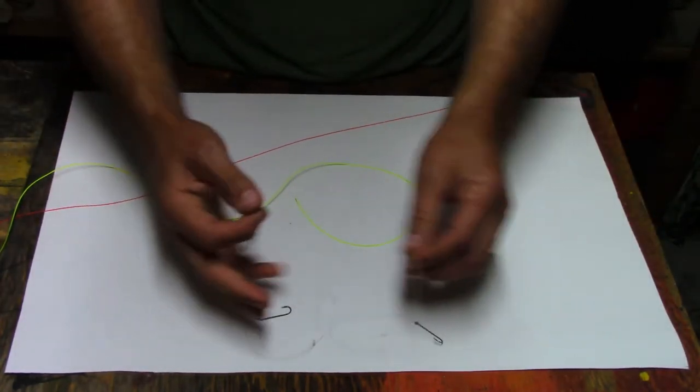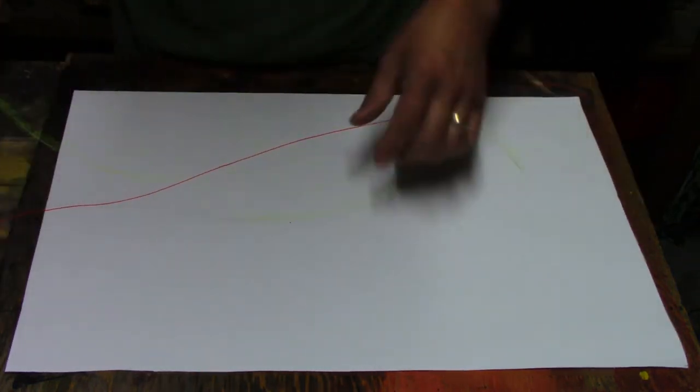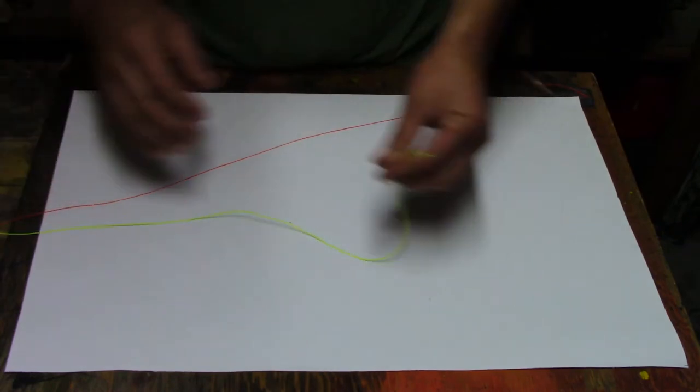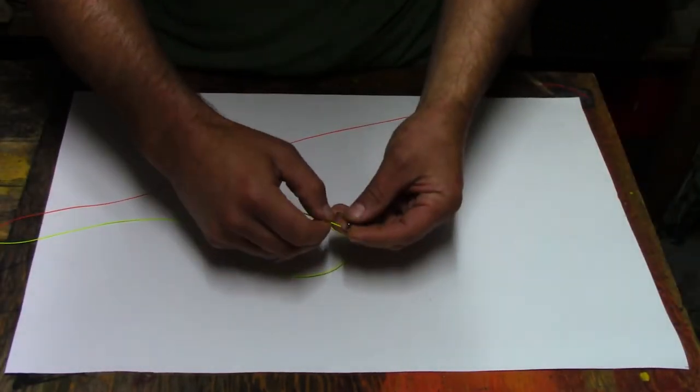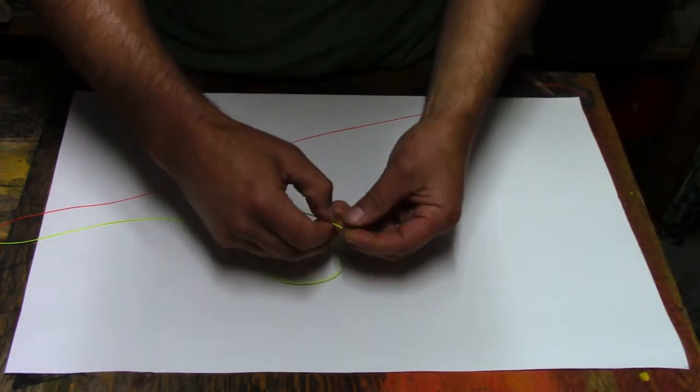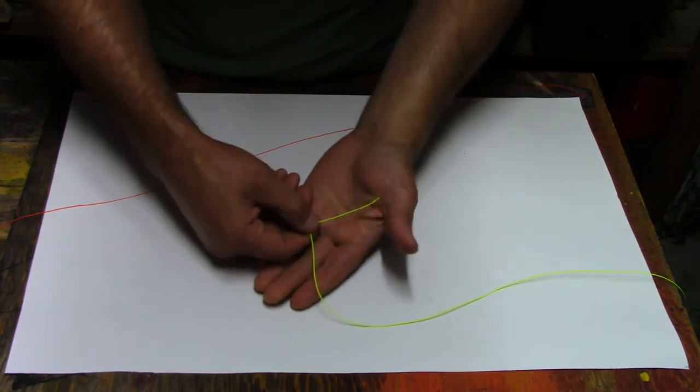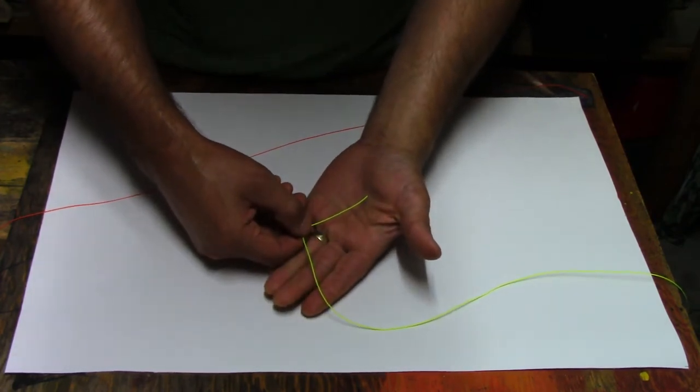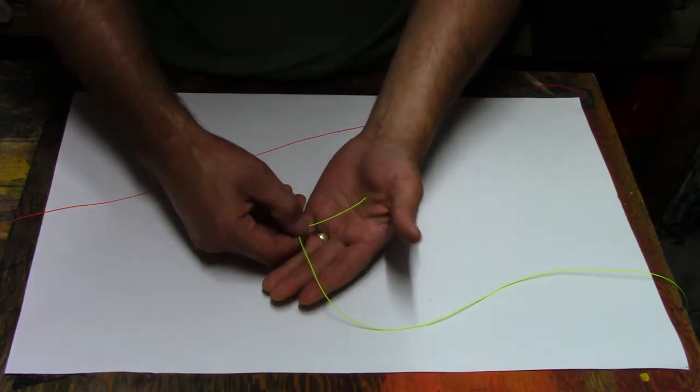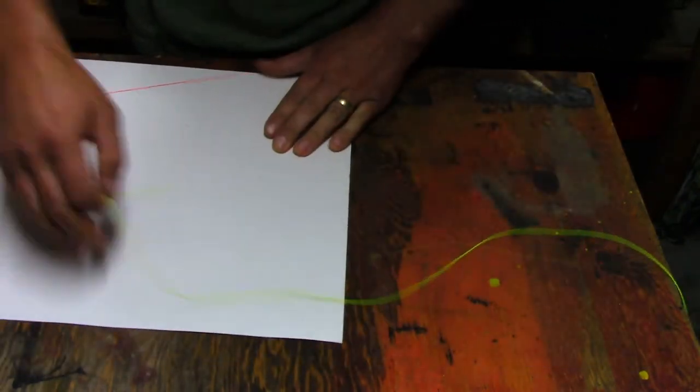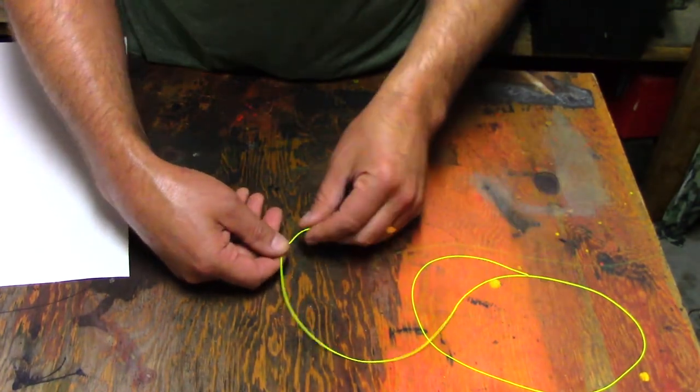Now how do we tie this all up? I'm going to use this as a main line. You're going to tie a barrel swivel onto that. This is for beginners, for people that really don't know anything about knots at all. The most basic knot is called the clinch knot.